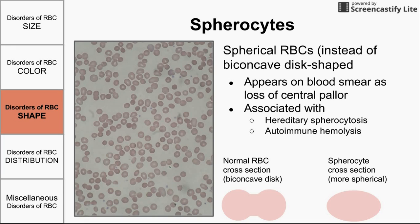Spherocytes are exactly what the name implies — red blood cells shaped like spheres instead of the usual biconcave disc. In a normal red blood cell, both ends of the disc cave in. In a spherocyte, the cells are round and spherical. On the blood smear, this looks like a loss of central pallor — that white region in the middle of the cells is gone. Spherocytes are associated with hereditary spherocytosis and autoimmune hemolysis.